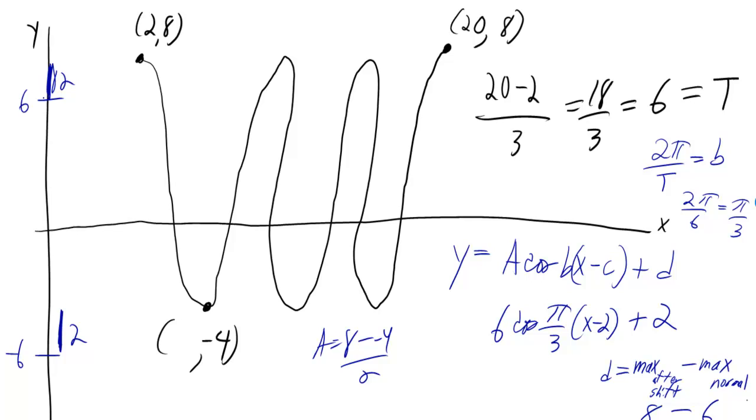In fact, if we normally had an amplitude of 6, then we would have something that goes between 6 and -6. But here it looks like everything was shifted up by 2. So you can just do the maximum after the shift, being 8, minus the maximum that you would normally have of 6. So 8 minus 6 is 2, so d is 2.